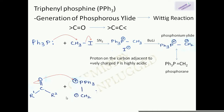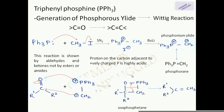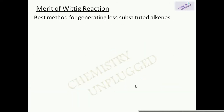This phosphorane or phosphonium ylide will then attack on a ketone or aldehyde. In the first step, the lone pair of electrons on the oxygen atom of the carbonyl will attack on the positively charged phosphorus, and the negatively charged carbon will attack on the positively charged carbon of the ketone. This gives a cyclic intermediate known as oxaphosphetane. Then this bond breaks and shifts, giving us an alkene and Ph₃P=O. Phosphorus has a strong affinity for oxygen, so it easily binds with it.